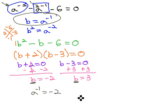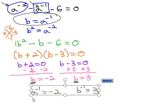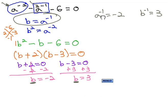A to the negative 1 equals negative 2, and b to the negative 1 equals 3. I'm running out of space. What I'm going to do is grab these and move them up here, so we have a little space to work.